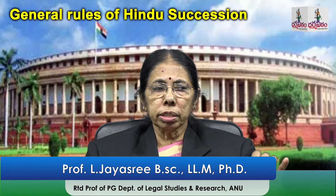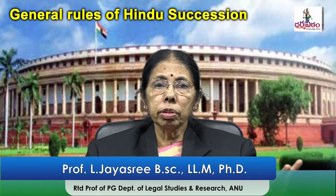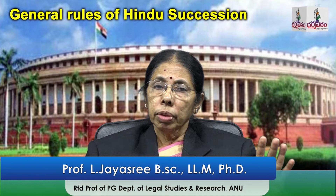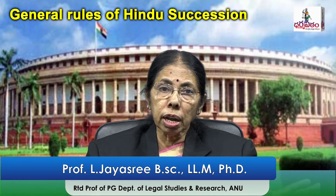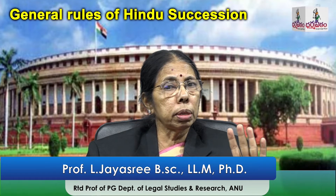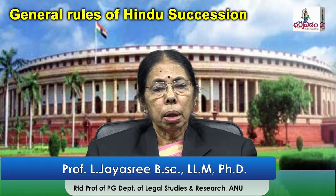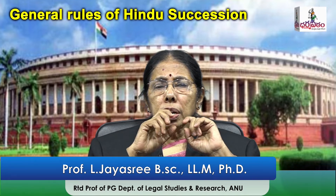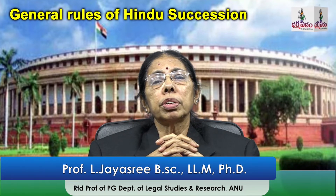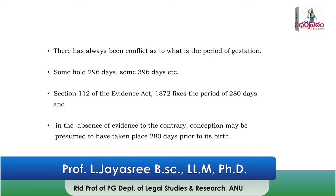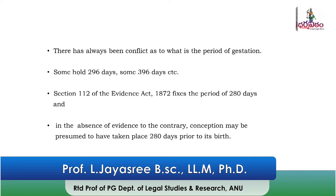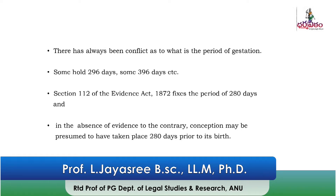So, two conditions: the child is in the womb and born subsequently alive — then the child will be considered present at the time of the intestate's death and will take the property from the date of death of the intestate. There has always been a conflict as to what is the period of gestation. Some say it is 296 days, some say it is 396 days, but Section 112 of the Evidence Act 1872 clearly lays down that it is 280 days.